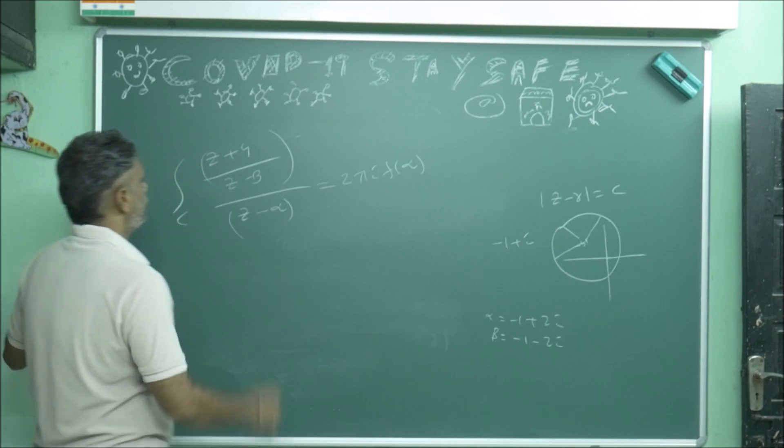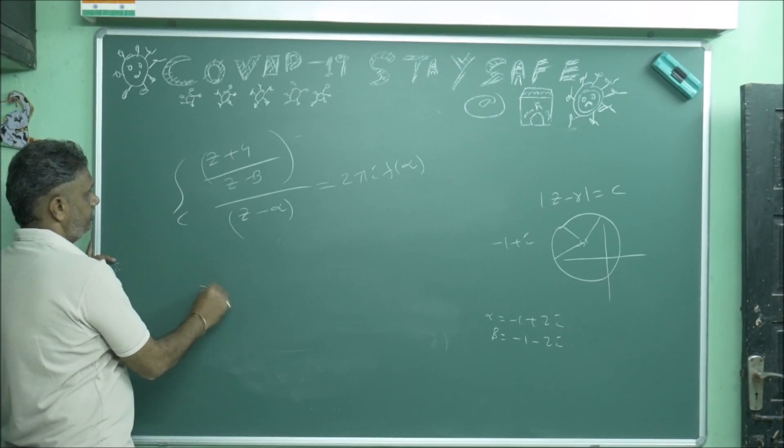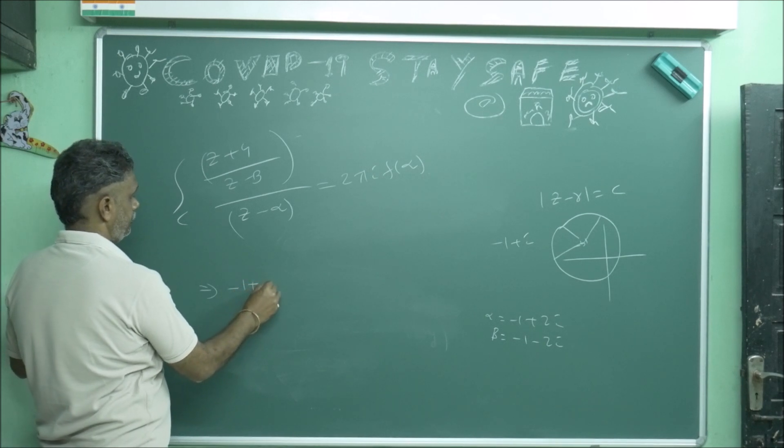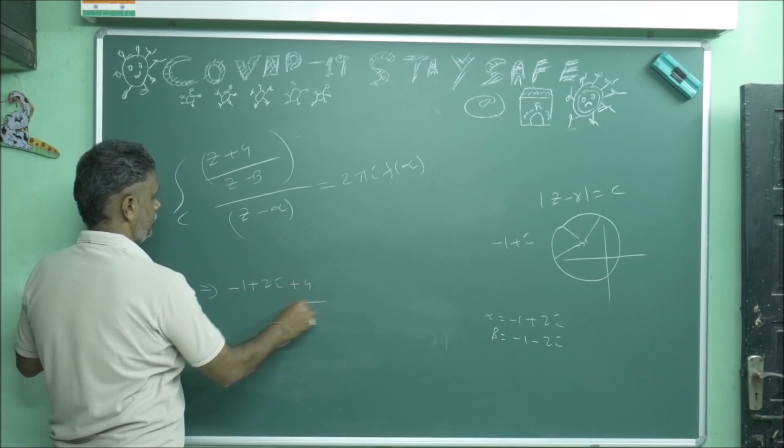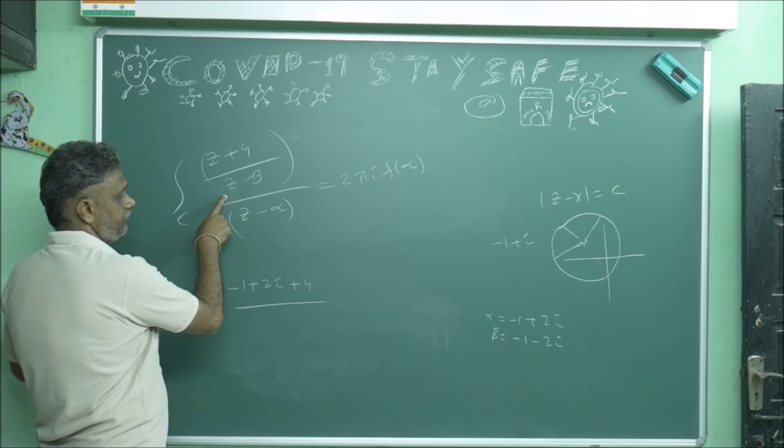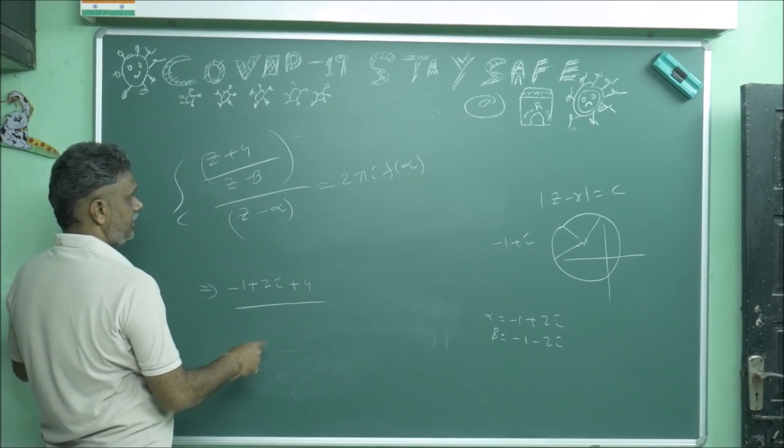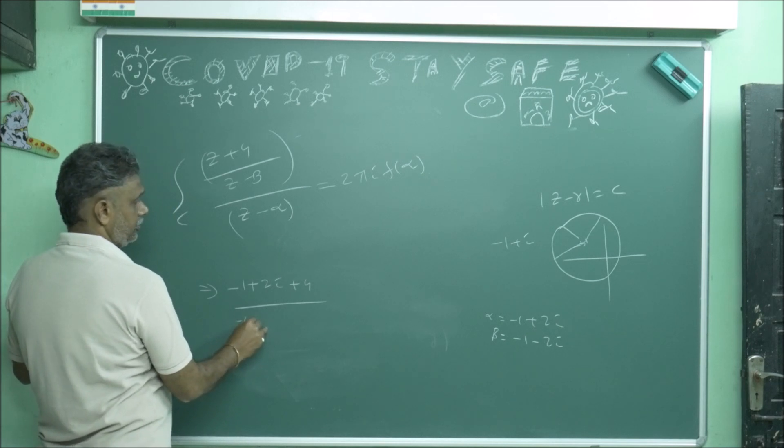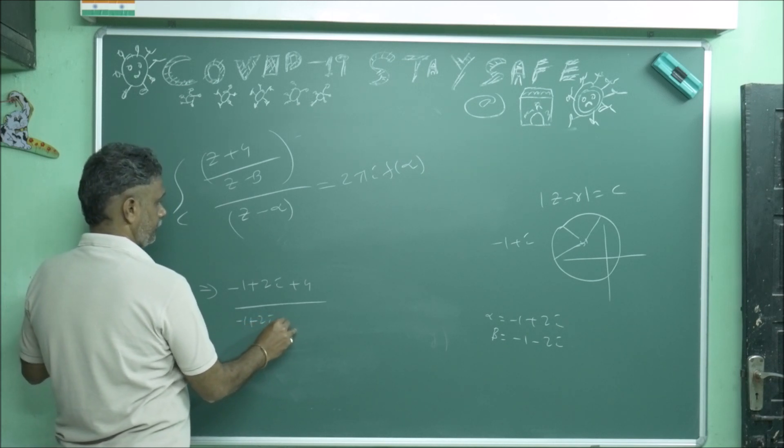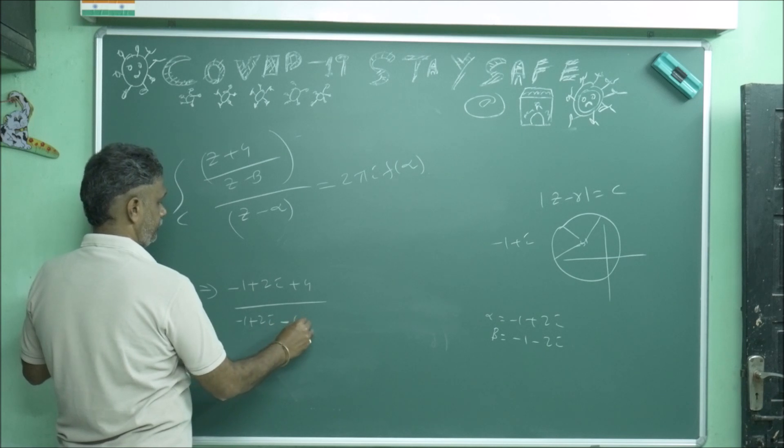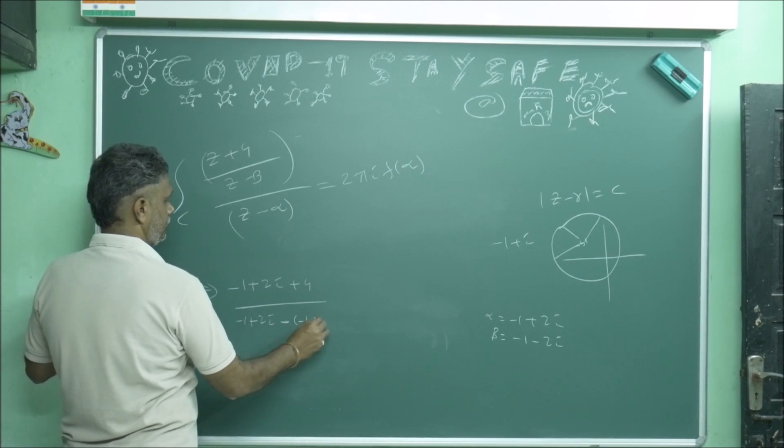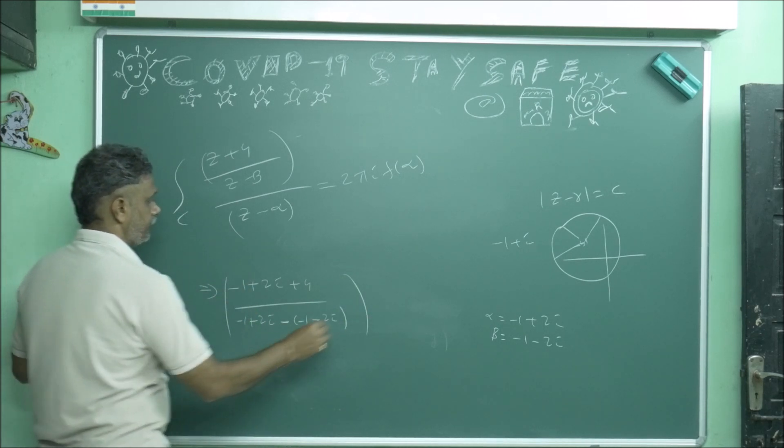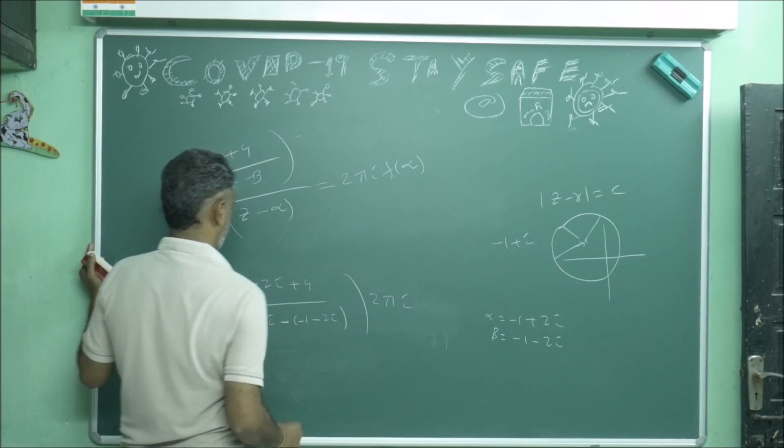Now substitute by this. You can substitute, what you will get? This is equal to 2πi times (-1 + 2i + 4) divided by (α - β). Who is z here? Actually that is α. α - β. So what will get: (-1 + 2i + 4) divided by (-1 + 2i - (-1 - 2i)) times 2πi.